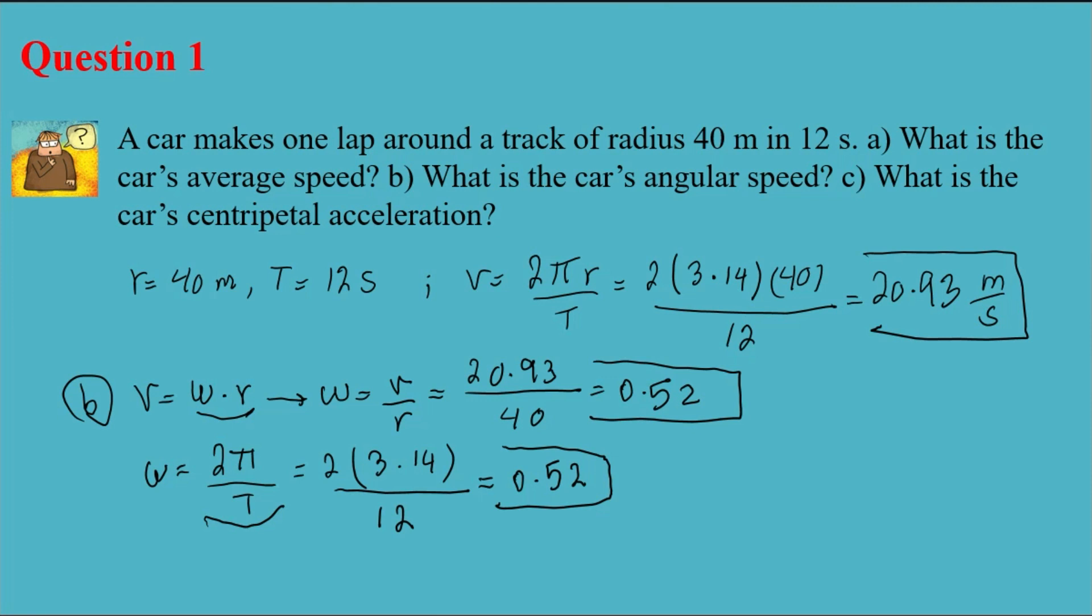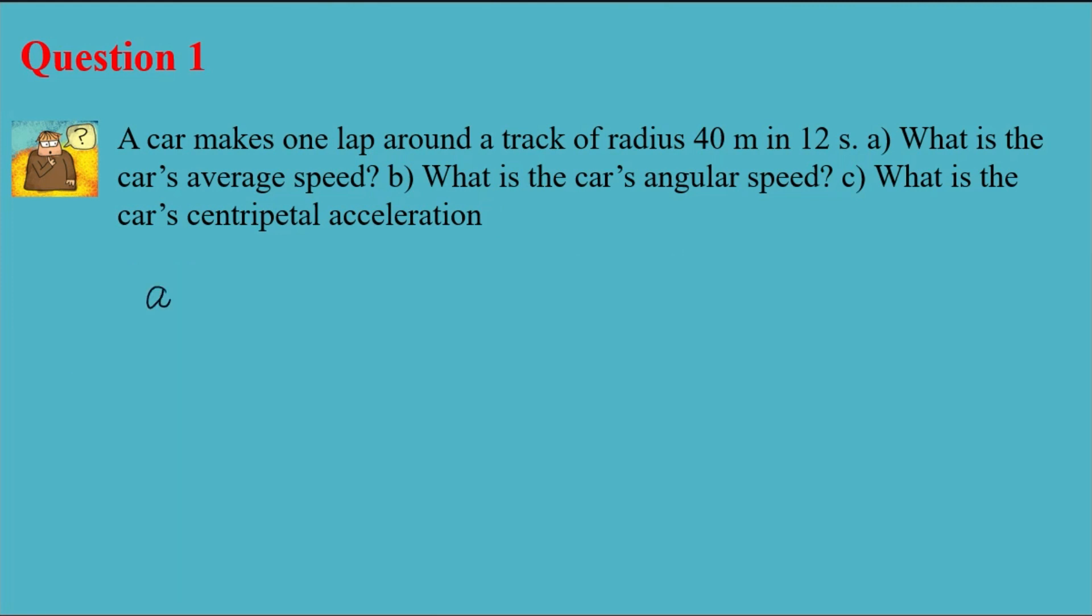Now let's solve the last part, centripetal acceleration. Centripetal acceleration a equals V squared over R. Here I have to use the answer from part A. V is 20.93 squared over R, which is 40 meters, and my answer is 10.95 meters per second squared. That's my final answer.